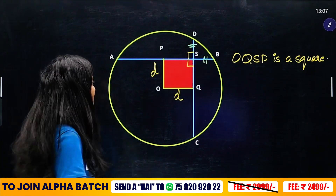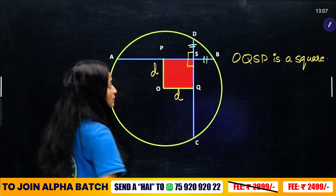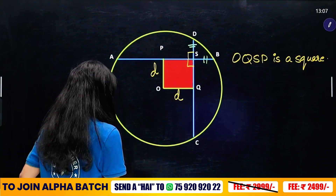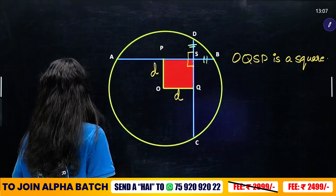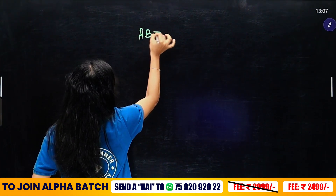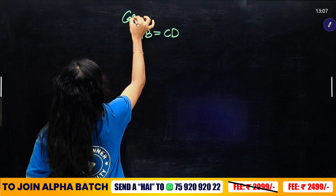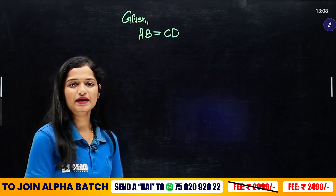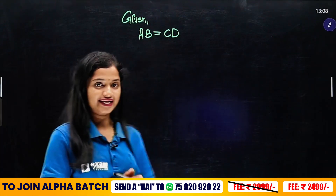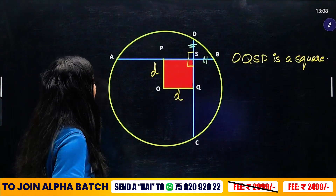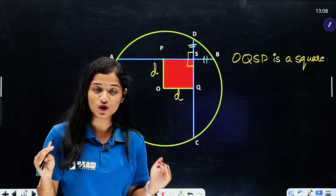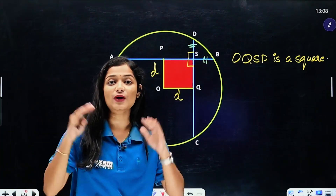AB is a chord. AB is equal to CD — this is a given item. The central perpendicular line: since the perpendicular from the center bisects the chord, AB is equal to CD.